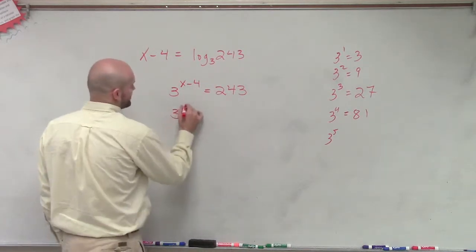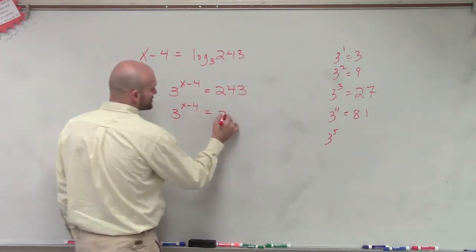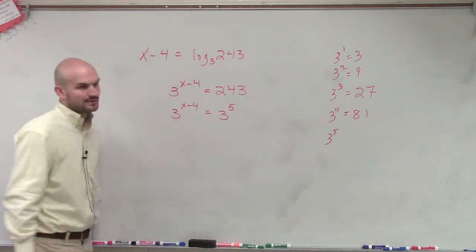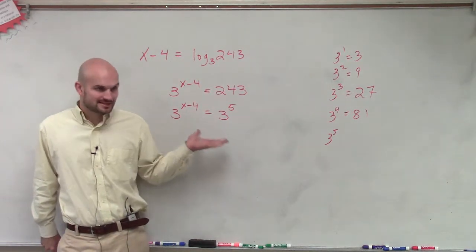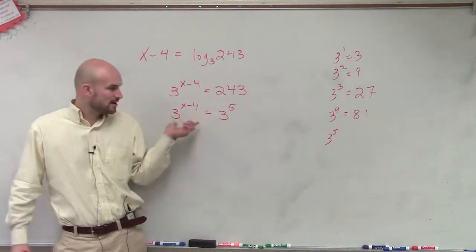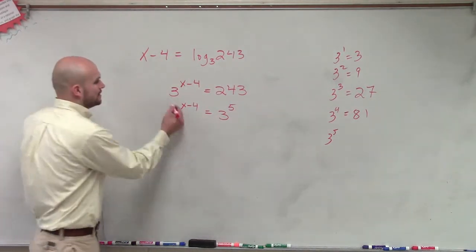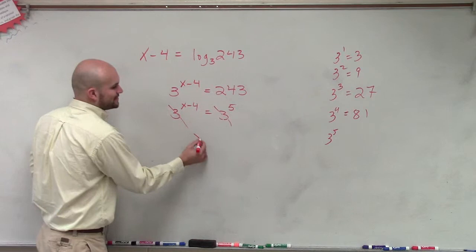So what that means is I can rewrite this as 3 to the x minus 4 equals 3 to the fifth power. You guys see how that works? So now I'm at this point. Since the bases are the same, we know that our exponents now have to equal each other.